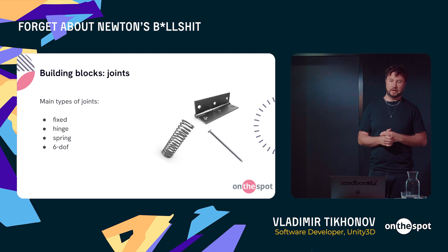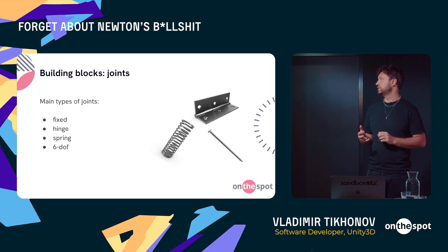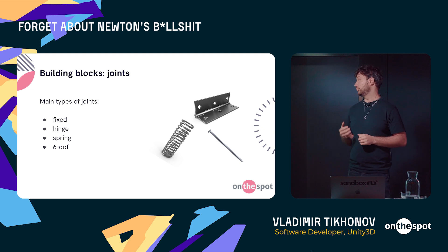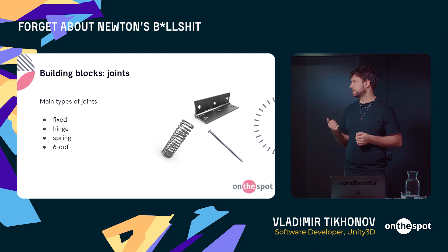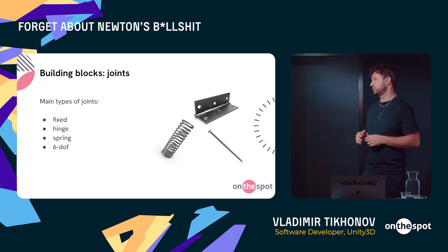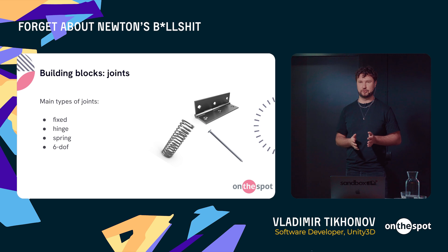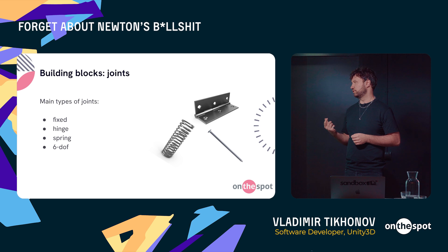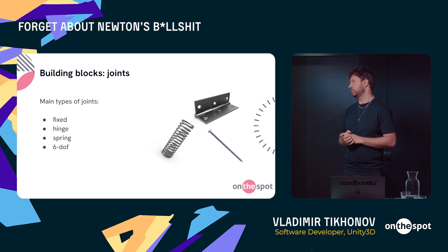The third building block is joints. Joints define how bodies interact with each other. The simplest real-world example of a joint is a nail — if you want objects to stick together, you just nail them. That nail in the physics world is a fixed joint. You can also have hinge joints — hinges are used to connect doors to door frames, and your elbow is a hinge. You can have springs. And you can have six-degrees-of-freedom joints, which are highly configurable and let you define rules for each degree of freedom — for example, two bodies should be five meters apart along the x-axis, move freely along y, and rotate up to 30 degrees around z.